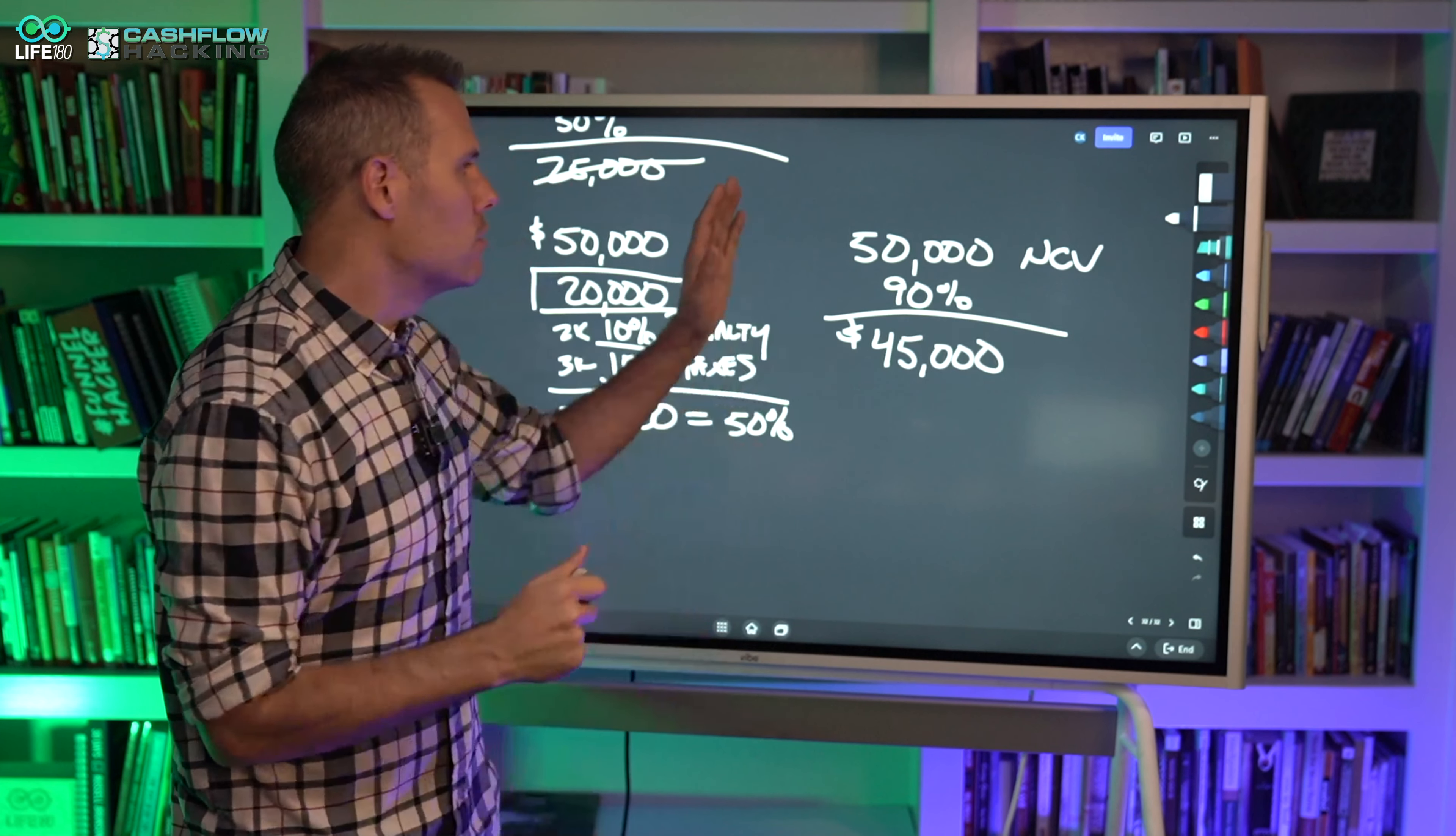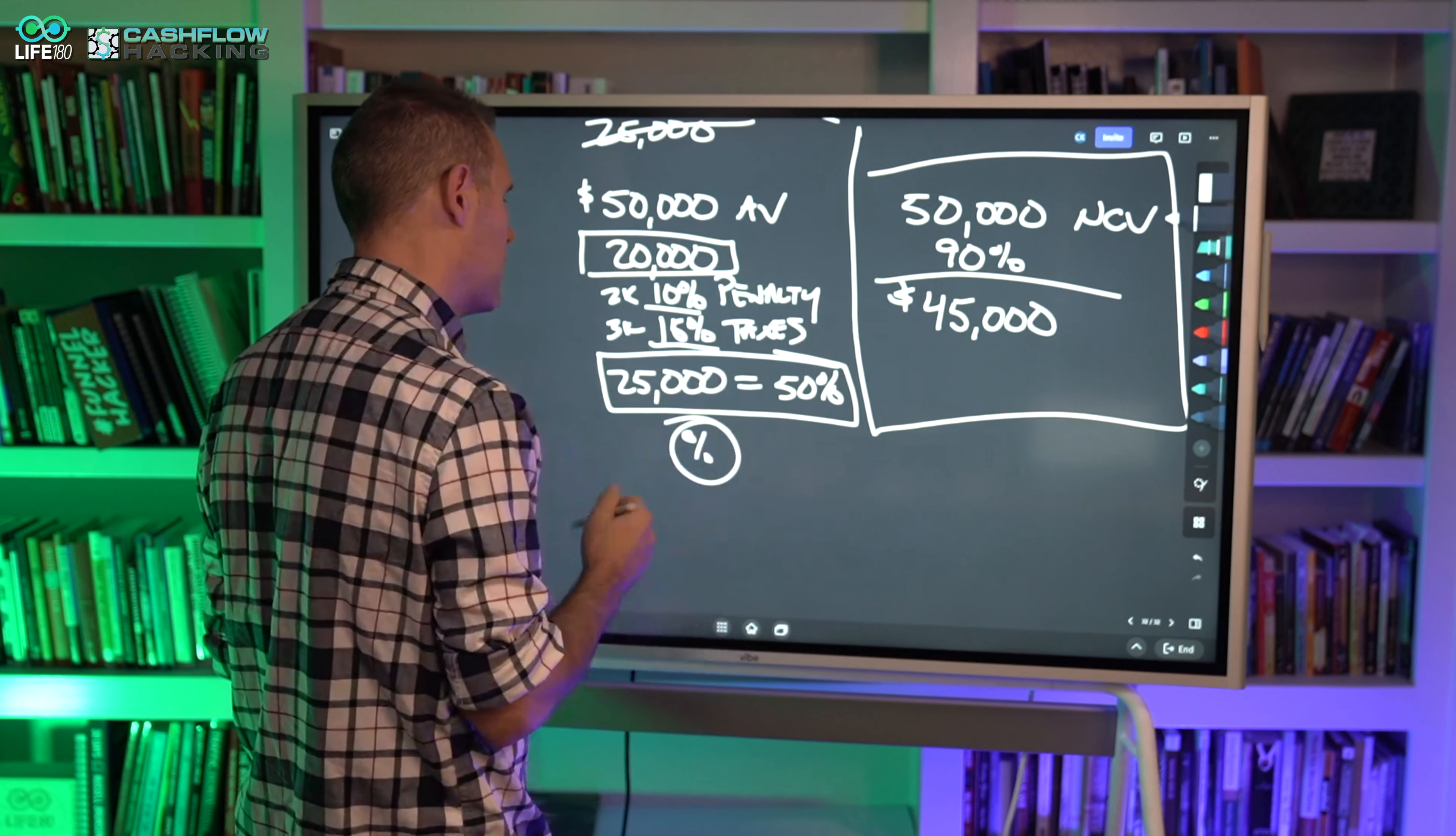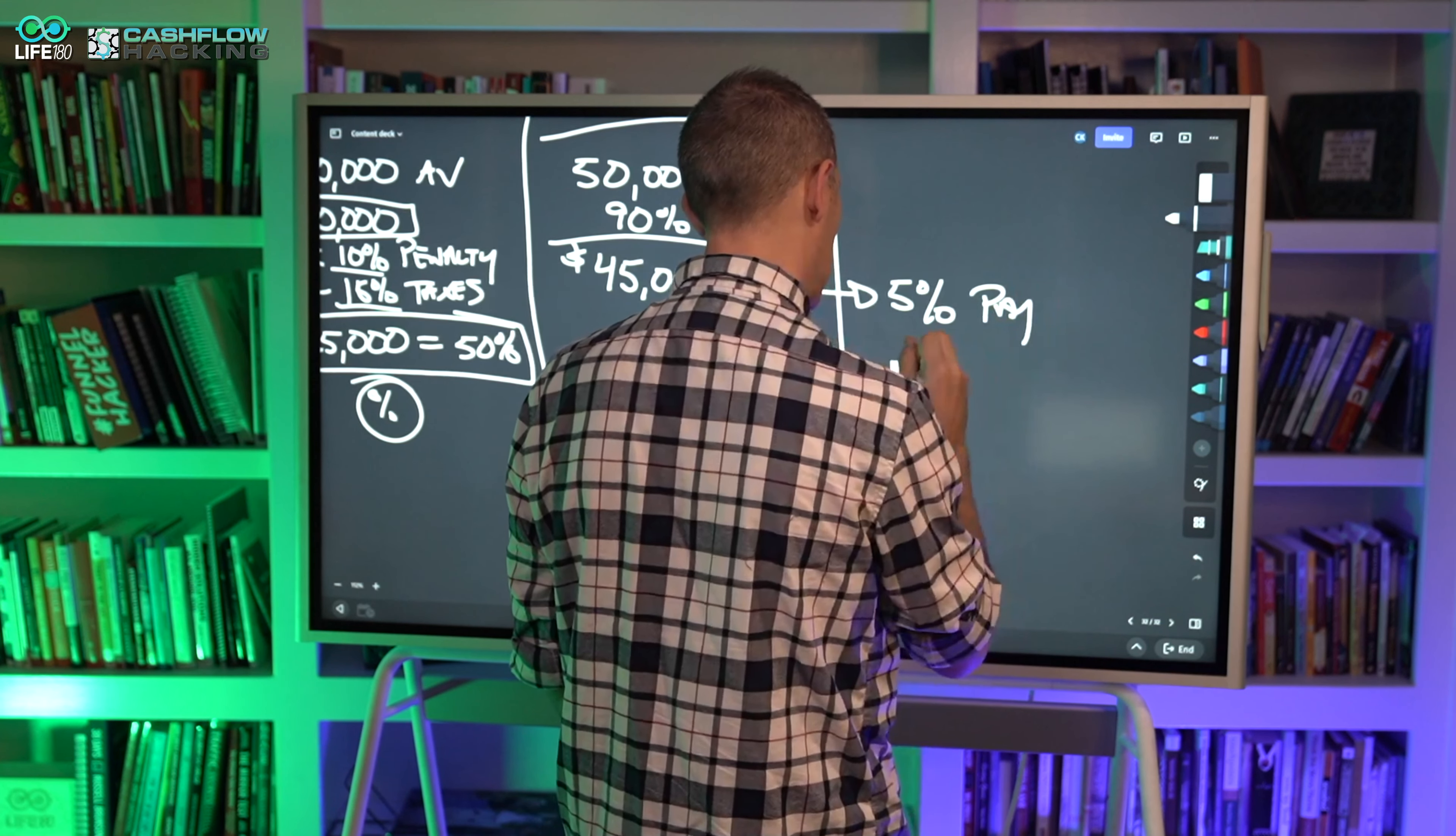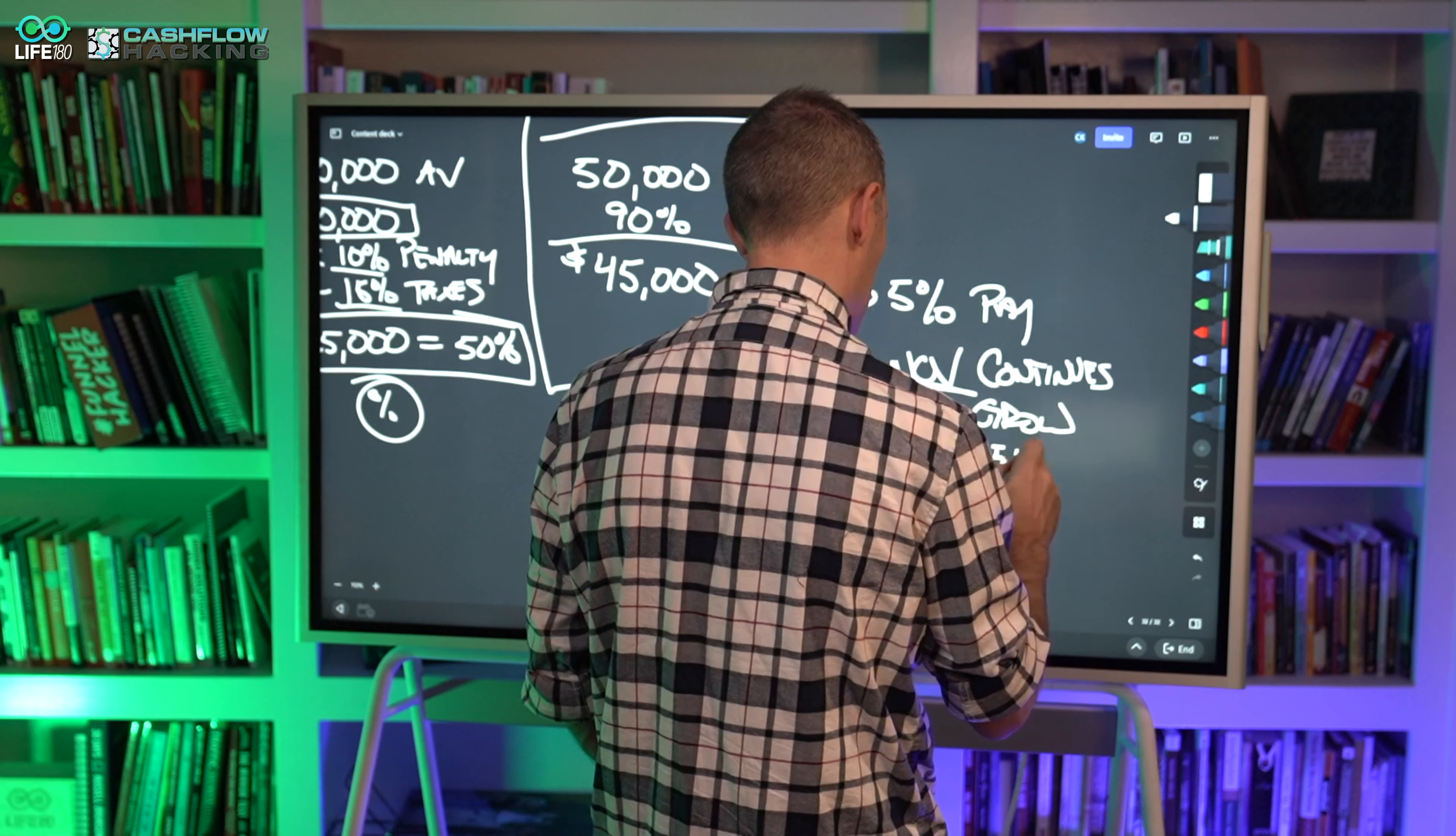Whereas in a whole life policy, if you had $50,000 of net cash value, you could have access to 90% of that, which is $45,000. This is the power of utilizing whole life insurance as a foundational asset. As we do this, this $25,000 that we've borrowed and set aside, you're not earning any rate of return on it. You're paying interest on it. Whereas if I took a $45,000 loan in a whole life policy, I may pay 5%, but the net cash value continues to grow.